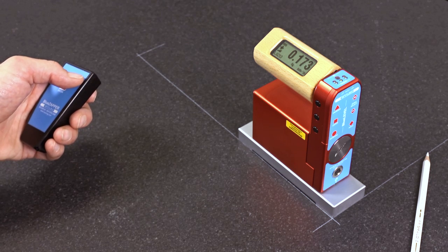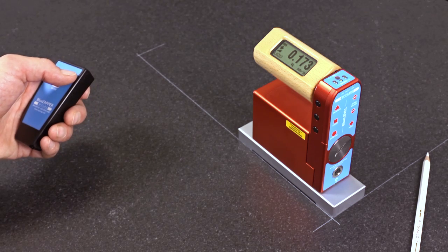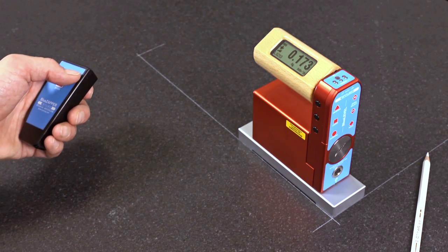My reversal measurement is now terminated and I can see that I have to correct the setting plate by 173 micrometers per meter.